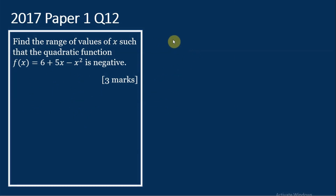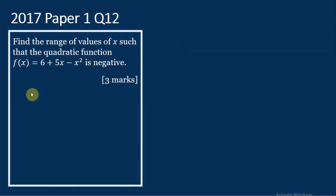Let's see another question. This is a past year question, year 2017, paper 1, question 12: Find the range of values of x such that the quadratic function f(x) equal to 6 plus 5x minus x squared is negative. Negative means less than 0. So what they want us to do is find the solution for this inequality: 6 plus 5x minus x squared less than 0.